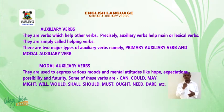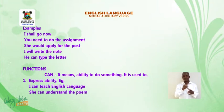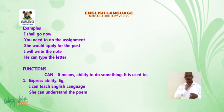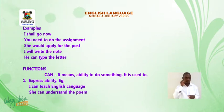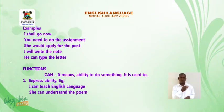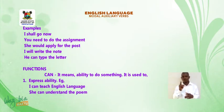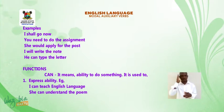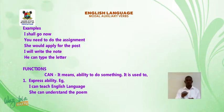Now let us see the various examples of these auxiliary verbs. One: I shall go now. You need to do the assignment. She would apply for the post. I will write the note. You can type the letter. All these examples have modal auxiliary verbs such as shall, need, would, will, and can.